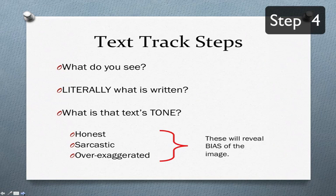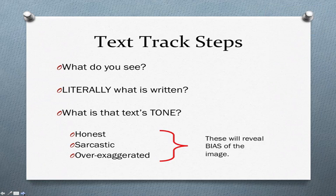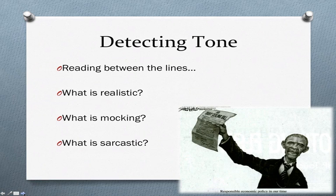After we've looked at the visual track, we look at the text track. Step one: literally, what words are printed on this image? Then we put this together and ask: what is the text's tone? Are these words an honest assessment of something, or is the author being sarcastic — meaning saying the opposite of what they actually mean? If we can deduce the text track's tone, that will help us reveal the bias of the image as a whole.